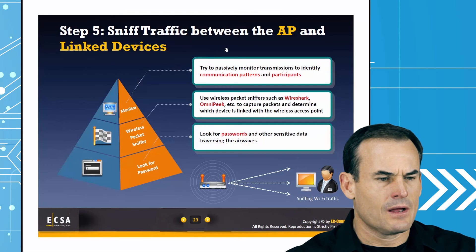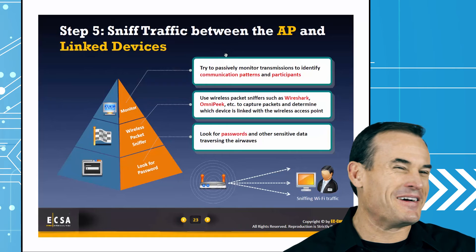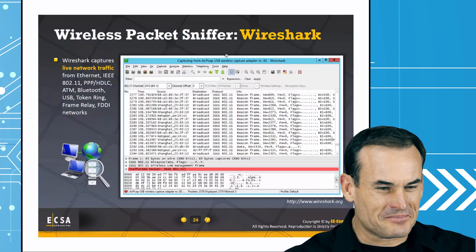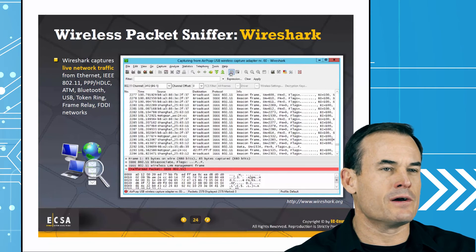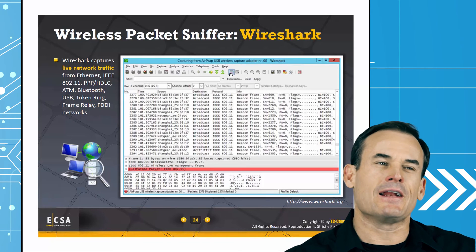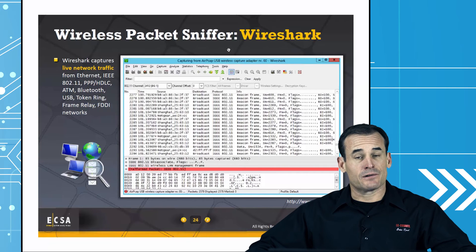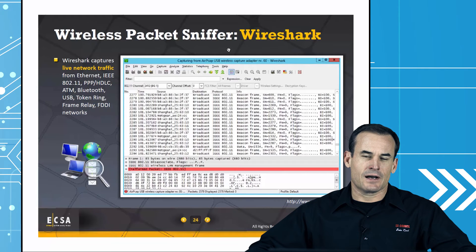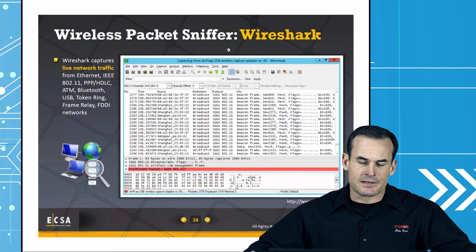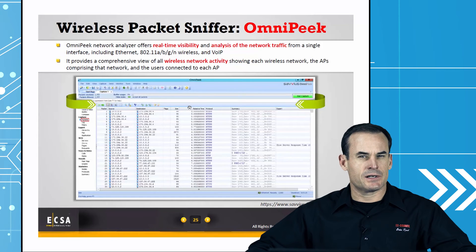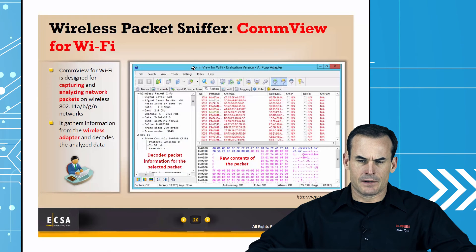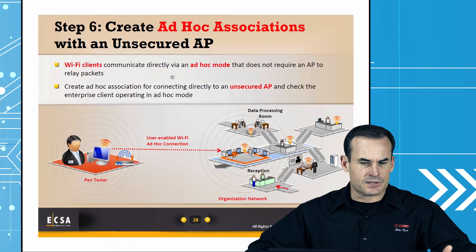Sniff traffic between the AP and linked devices looking for passwords or other sensitive data. Wireshark in Windows requires a monitor mode adapter with PCAP support. In Linux environments, generally just put an adapter into monitor mode using AirMon and use the mon-mode adapter. Omnipeak costs a bit more for the software but gives more flexibility in card selection. CommView for Wi-Fi is another option in this toolset.